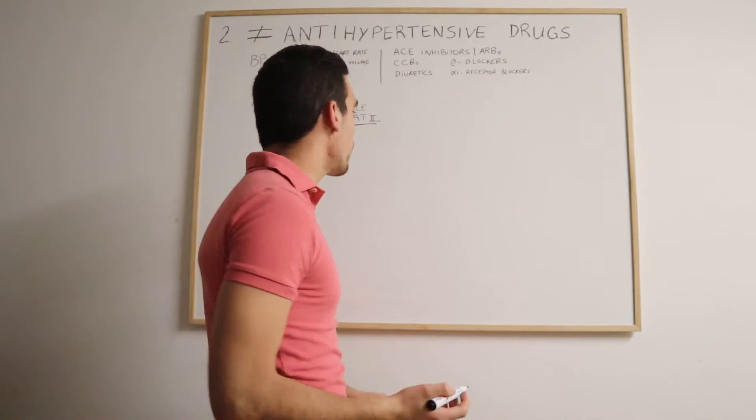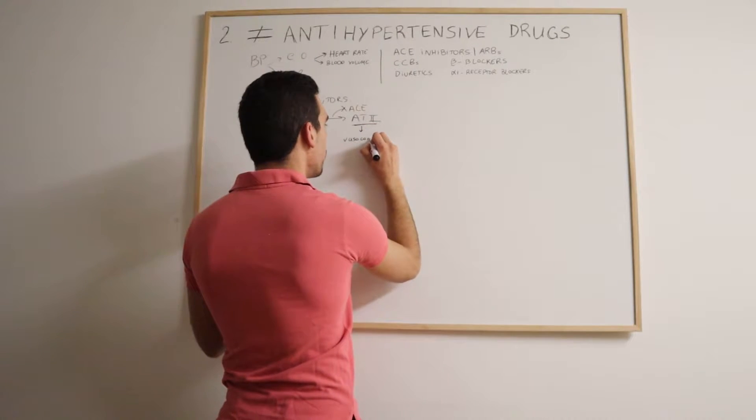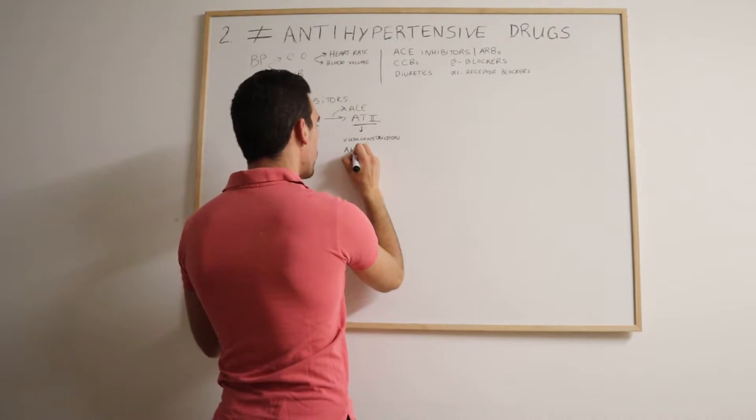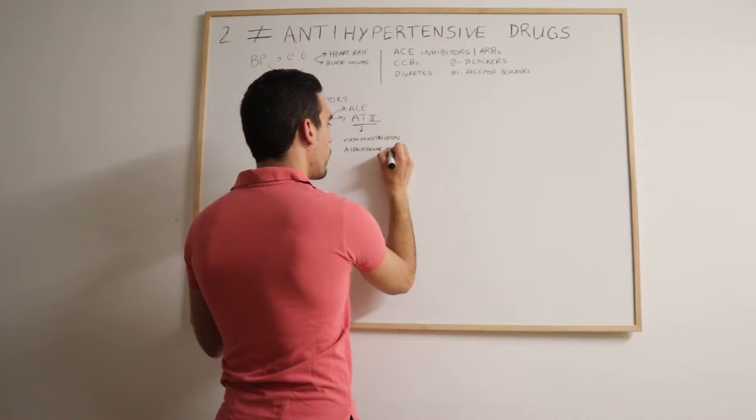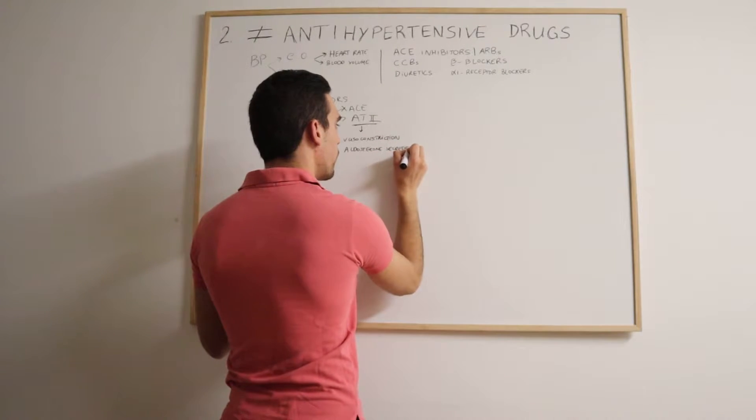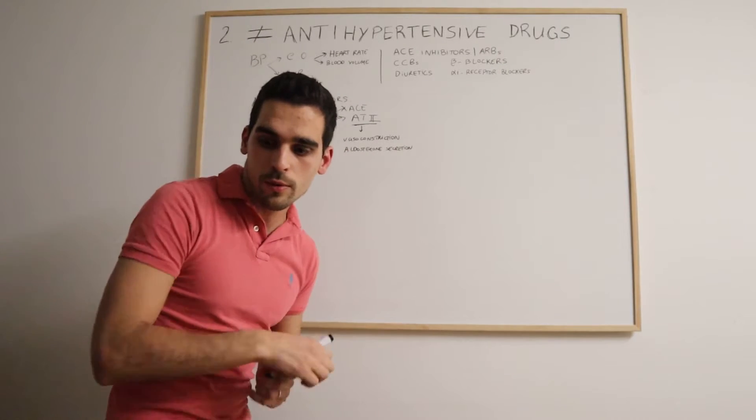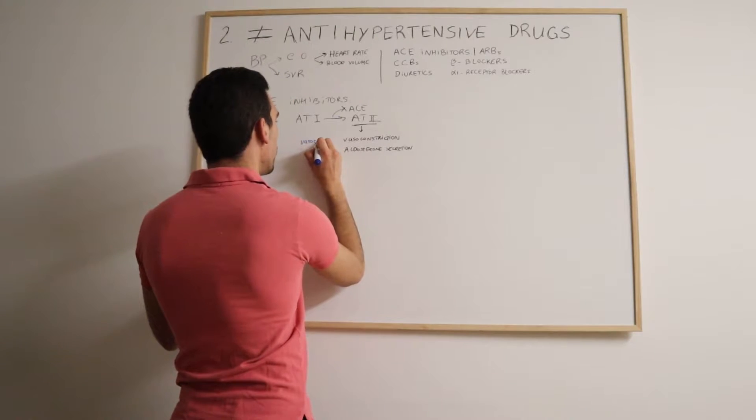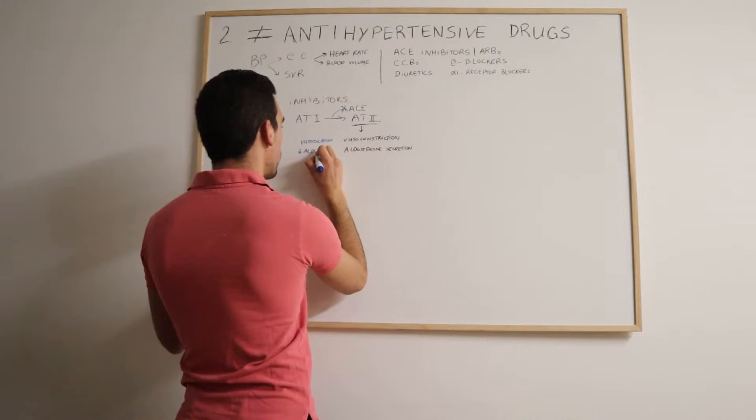As you may know, angiotensin 2 is responsible for vasoconstriction as well as aldosterone secretion. So it promotes aldosterone secretion. If we are blocking the effects of angiotensin 2, we'll have the opposite. So we'll have instead vasodilation when blocked and we'll have also less effects of aldosterone.